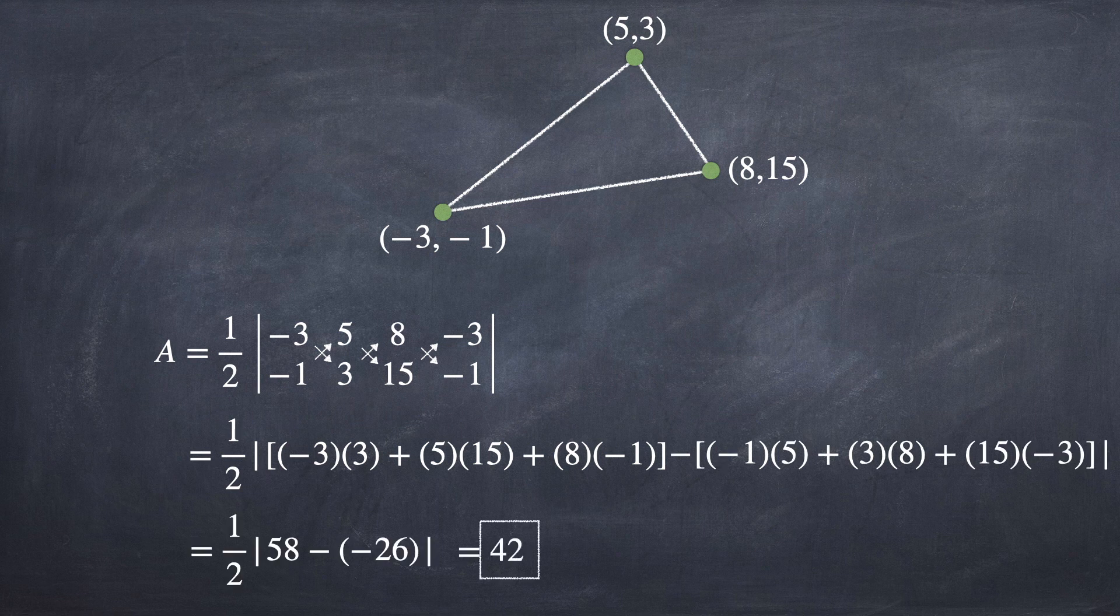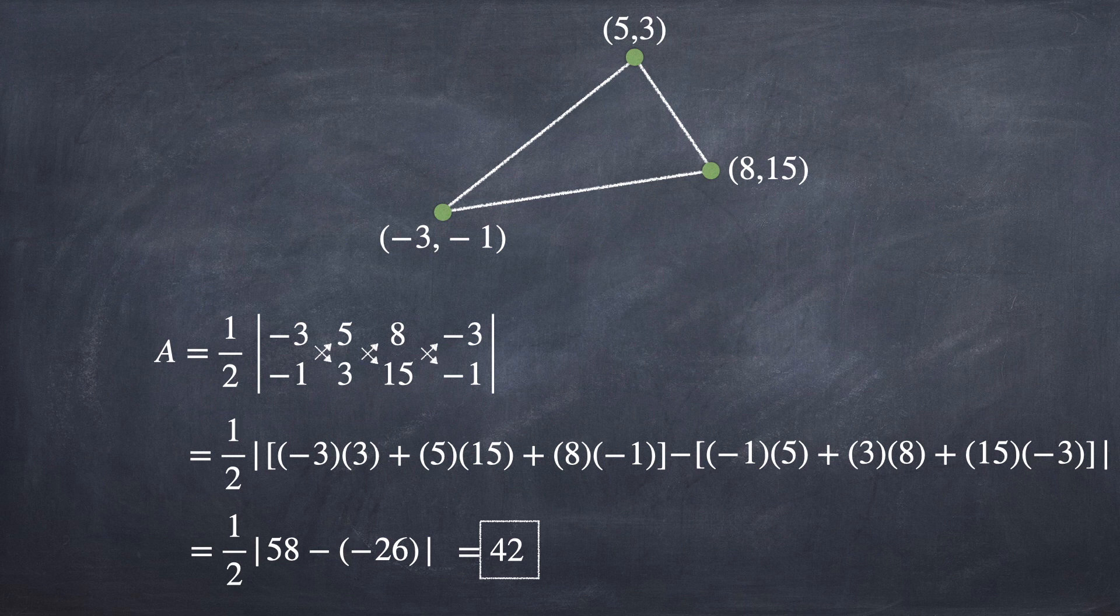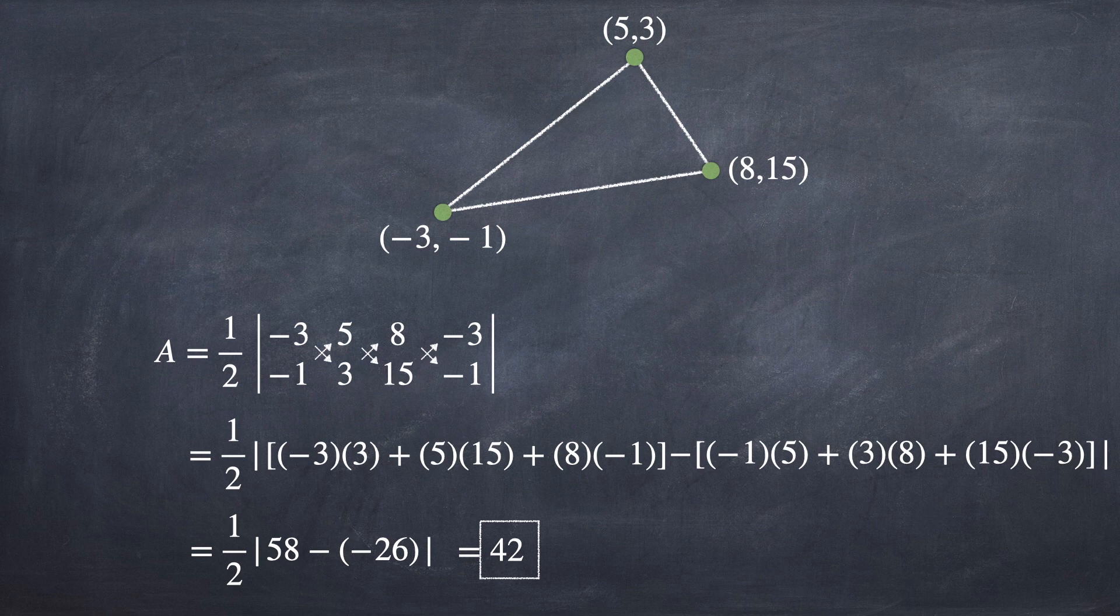This means that the area of the triangle is 42 units squared.